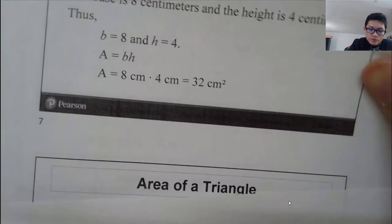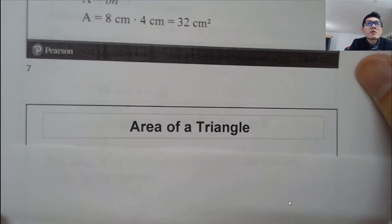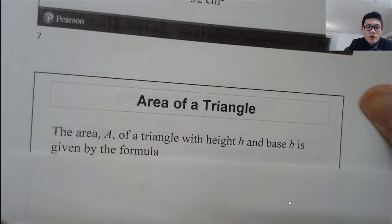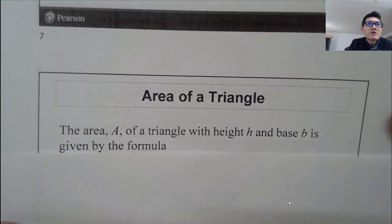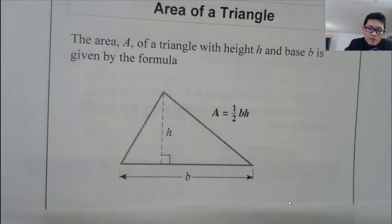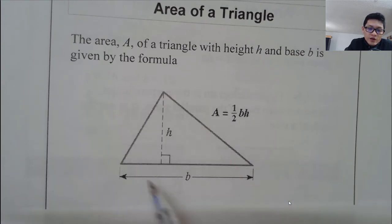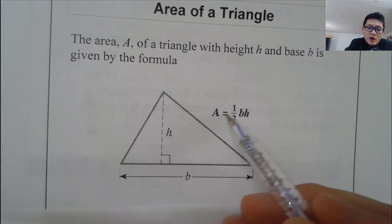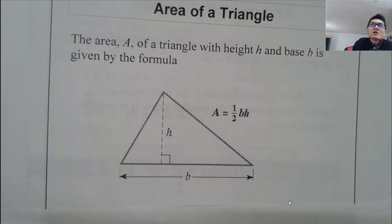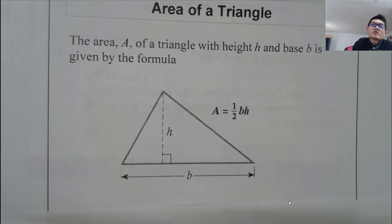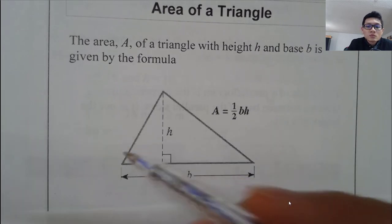The next topic is the area of a triangle. The area A of a triangle with base B and height H is given by the formula: A = ½ × base × height. That is the famous triangle area formula.